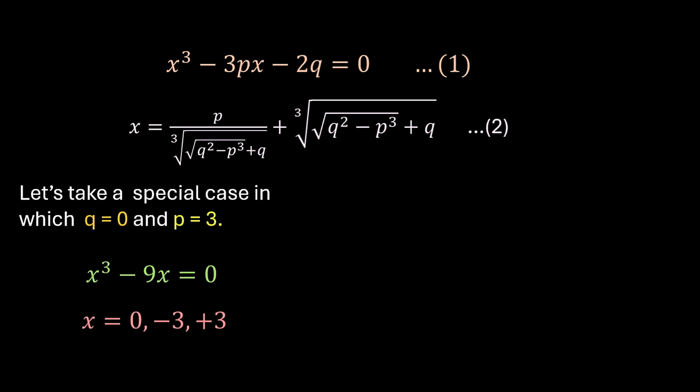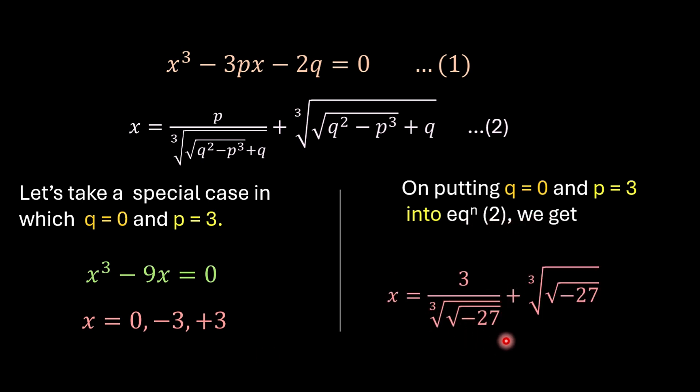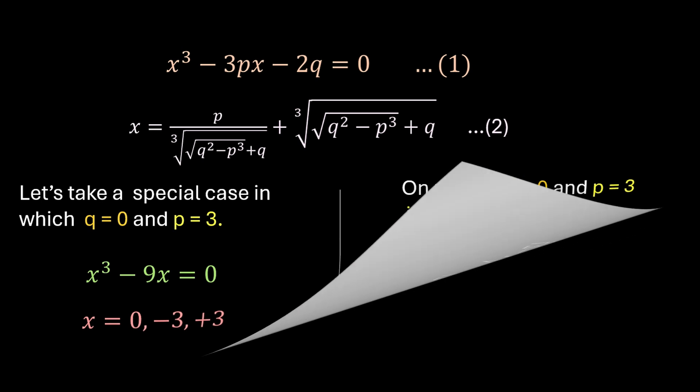However, when we substitute q = 0 and p = 3 into the general solution formula, we get a negative quantity inside the square root. So there is a dichotomy: the direct solution gives real roots, but the general solution formula produces a negative number under the square root. We avoided this confrontation for the quadratic equation by simply saying negative quantities are not allowed inside the square root — but now we can't just get away with saying that. This dichotomy was removed by Cardano.